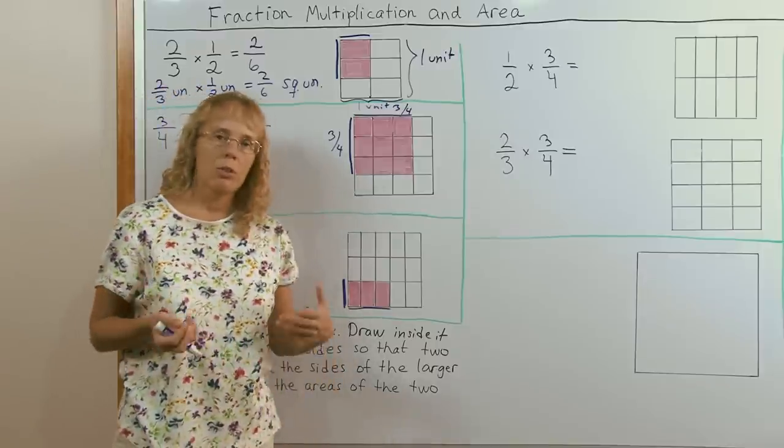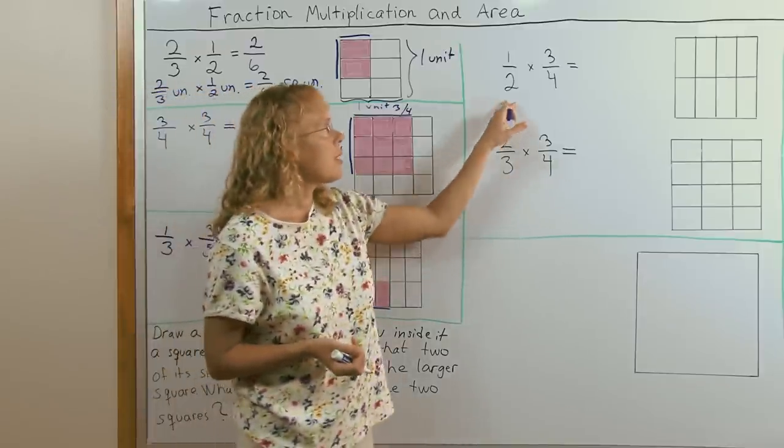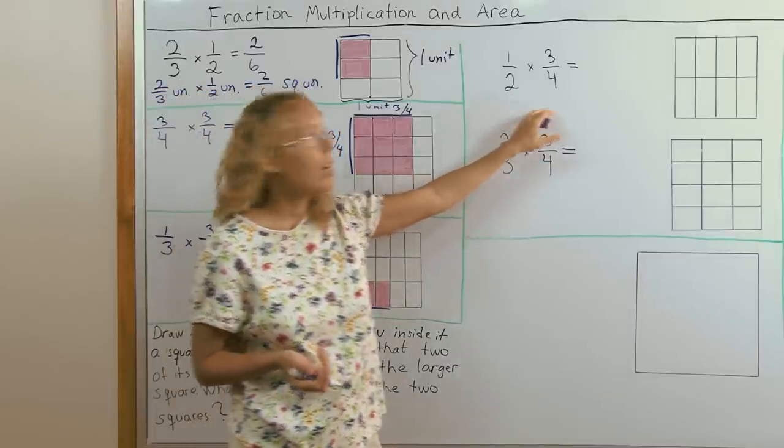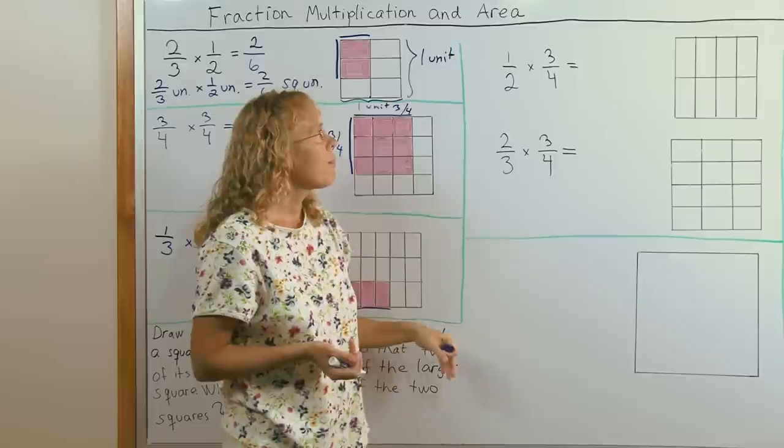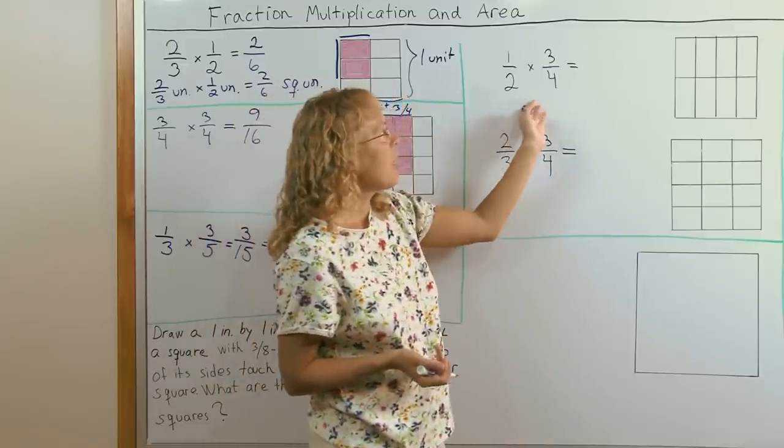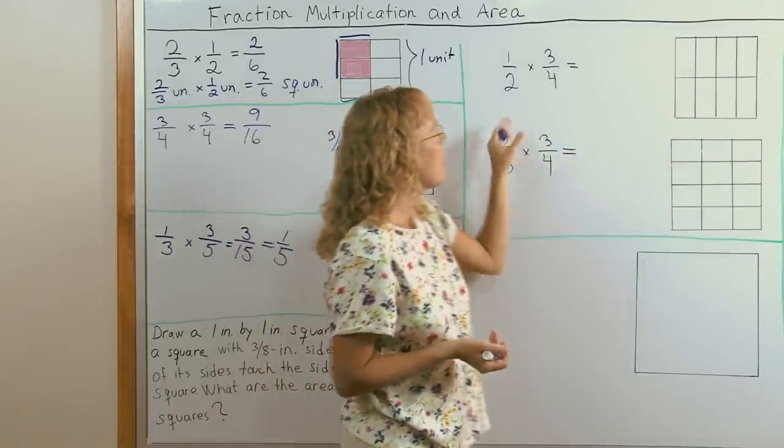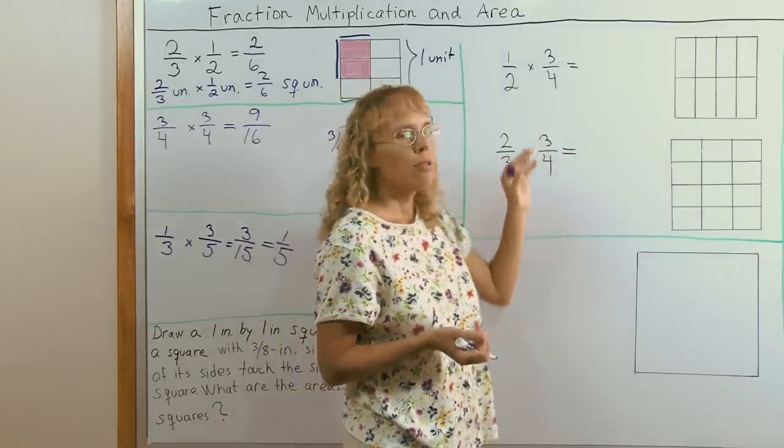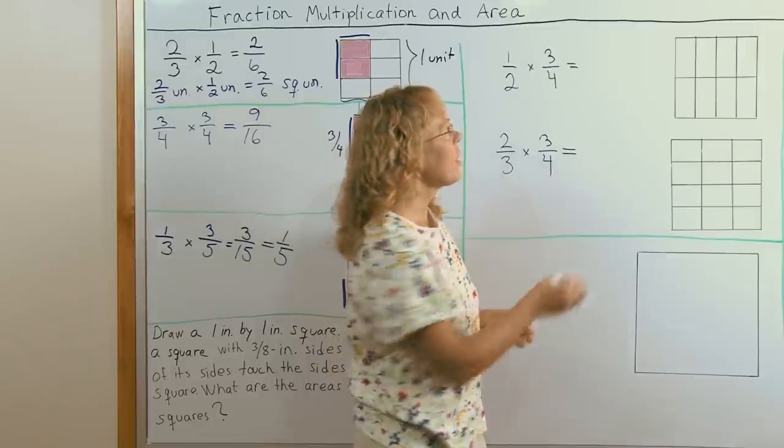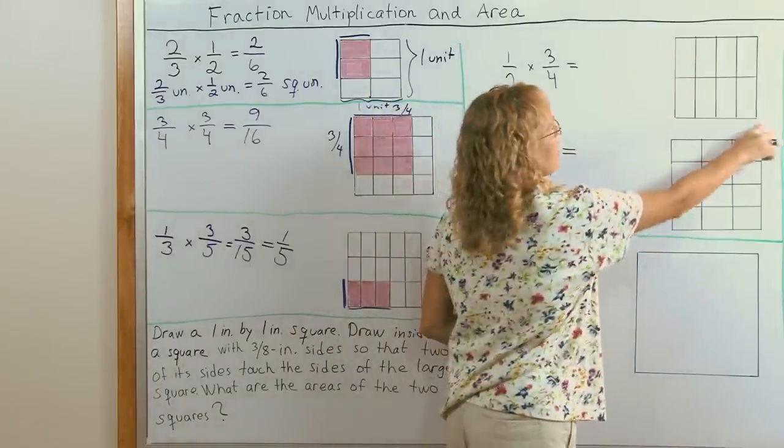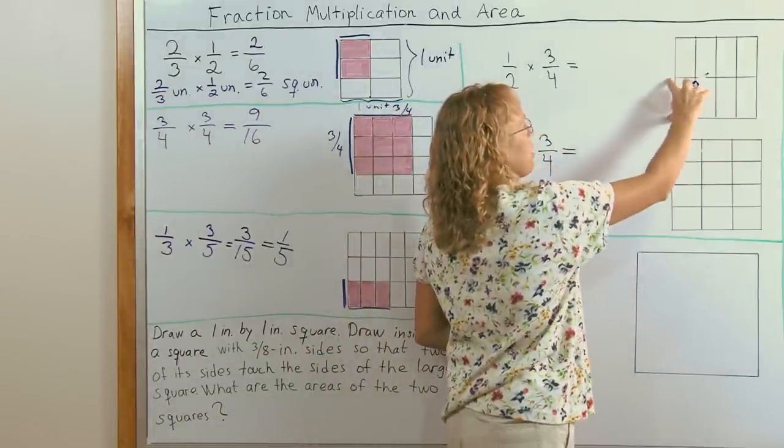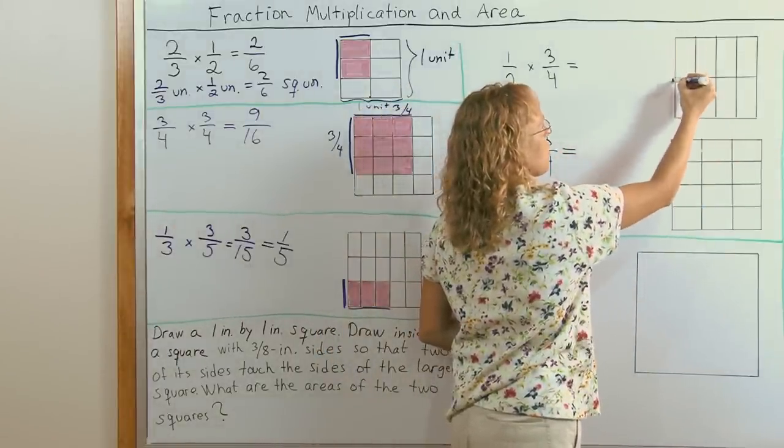Another type of exercise we can do is that we give students the multiplication and they need to color in, make the model. So for example, one half times three fourths. If I have my model here ready, then one half, I look for the side which is divided into two parts. So it is this side, not this side but this side. So I can choose either this or this. Let's choose this here.